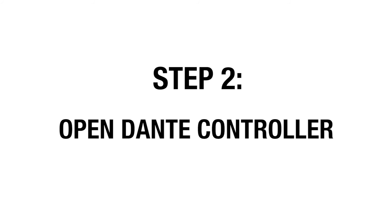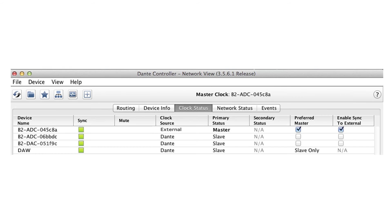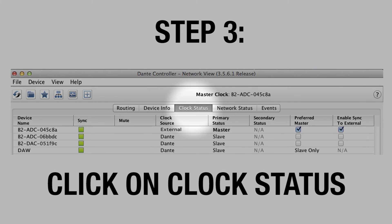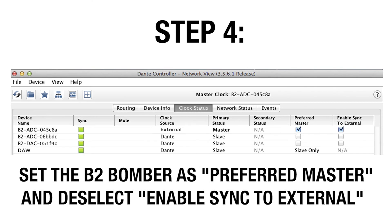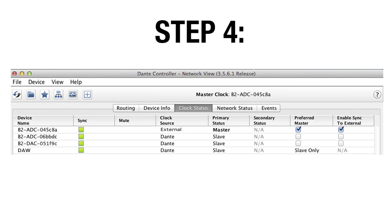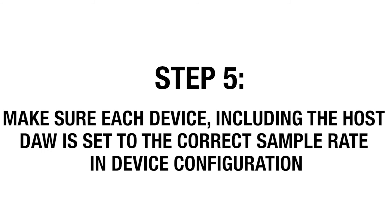Step 2: Open Dante controller. Step 3: Click on clock status. Step 4: Set the B2 Bomber as preferred master and deselect enable sync to external. This means that the Dante card in B2 ADC number 1 will run on its internal clock, rather than getting the clock from the B2 clock control. Step 5: Make sure each device, including the host DAW, is set to the correct sample rate in device configuration.